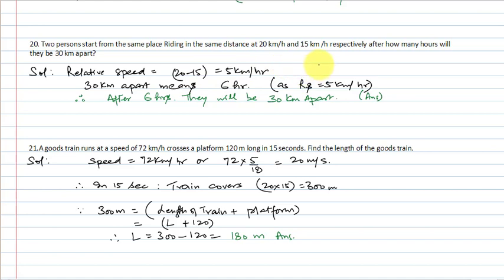In 1 hour they are 5 km apart. So to be 30 km apart: 5 km in 1 hour means 30 km in 6 hours. So they will be 30 km apart after 6 hours.